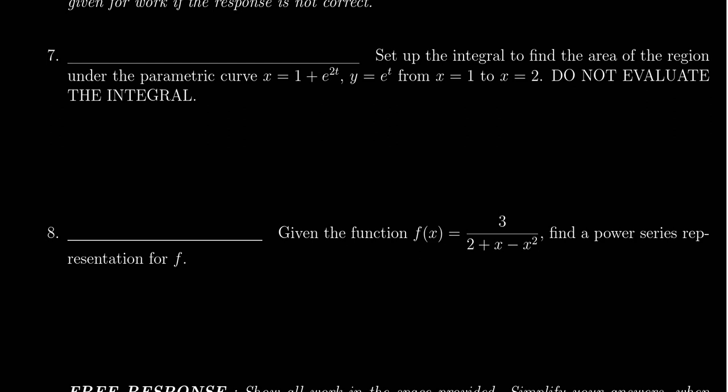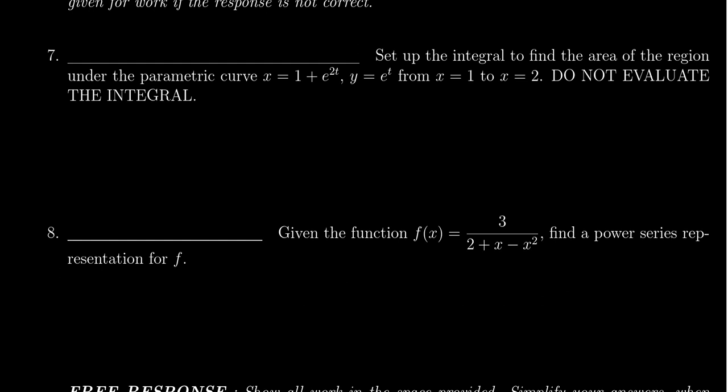In this question, we're asked to set up the integral to find the area of the region under the parametric curve given as x = 1 + e^(2t) and y = e^t, where x ranges from 1 to 2. This is a setup question. Although simplifications are necessary, we are not expected to actually evaluate the integral.